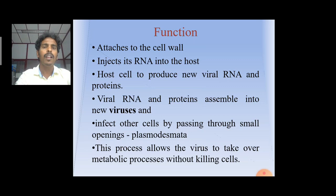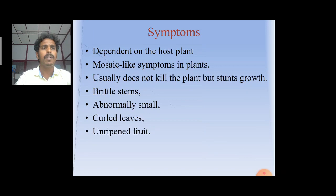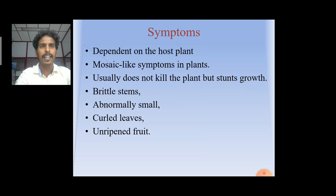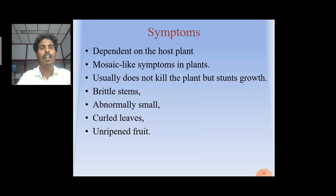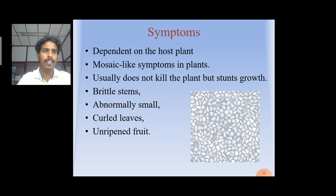The symptoms of TMV, tobacco mosaic virus, are dependent on the host plant. There are mosaic-like symptoms in plants including discolored leaves showing pale green and yellowish colors. Usually it does not kill the plant but stunts growth. Other symptoms include brittle stems, abnormally small and curled leaves, and unripened fruits. This image shows the mosaic-like symptoms.